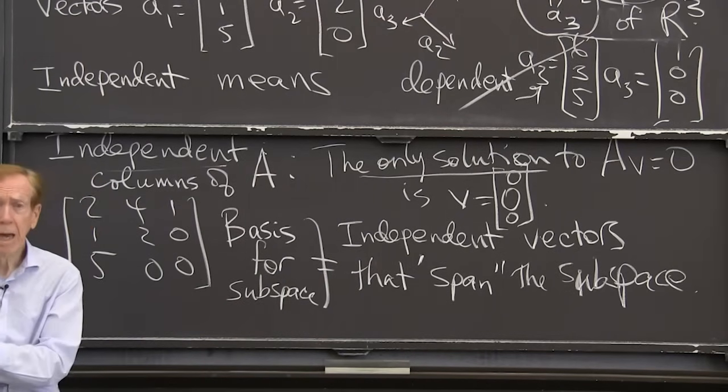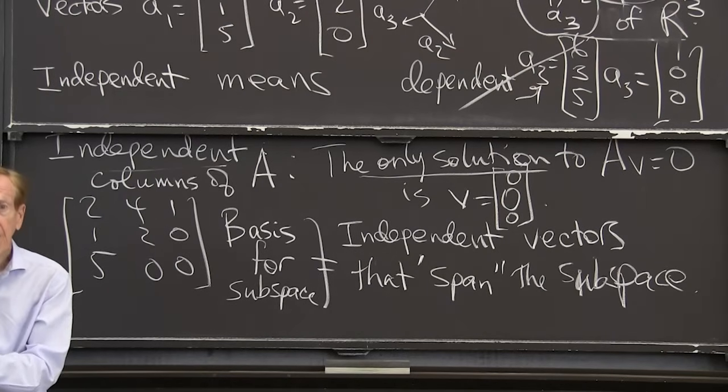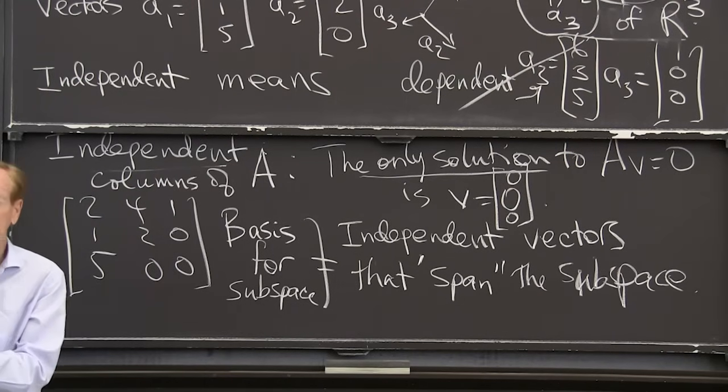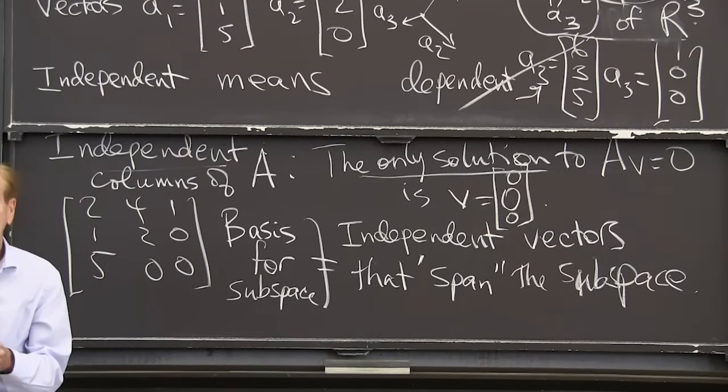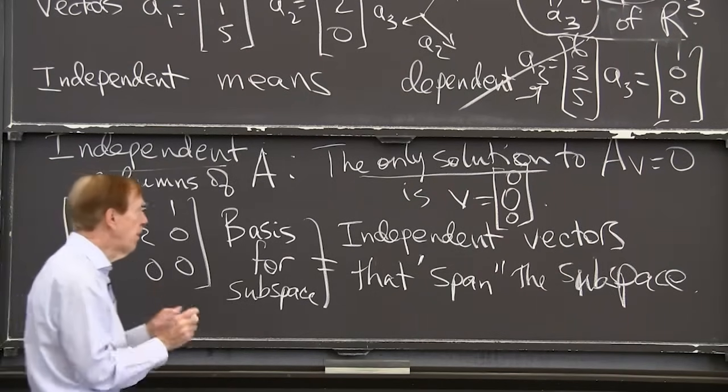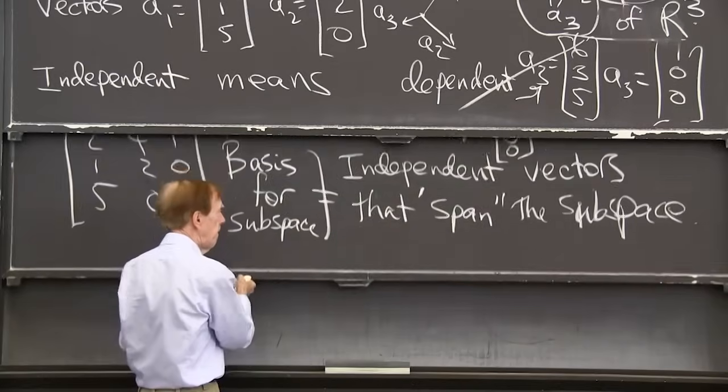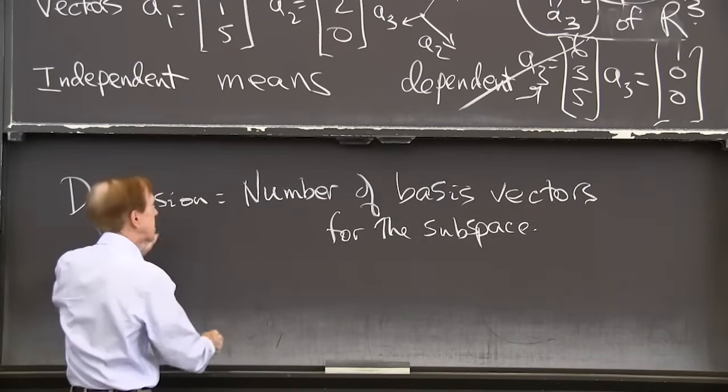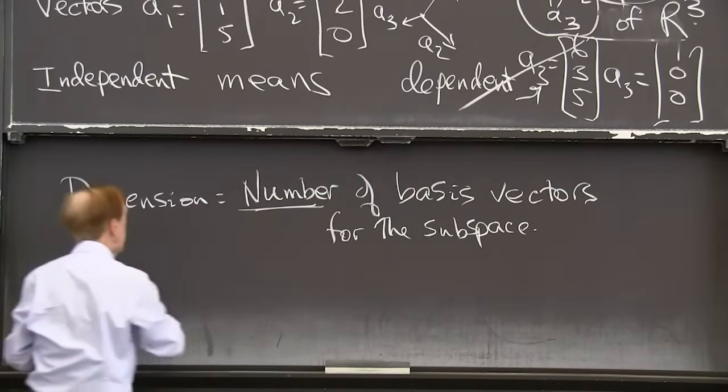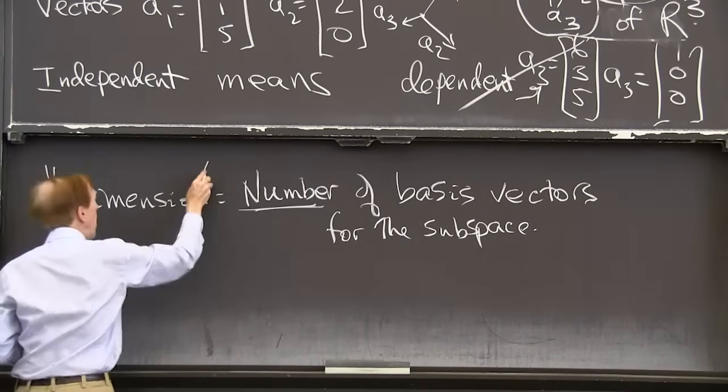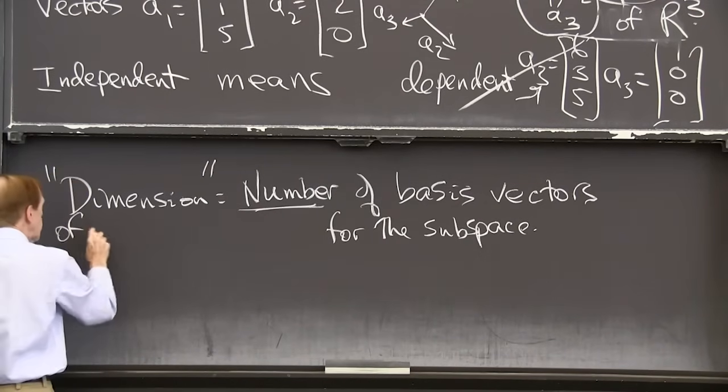If I have too many, then the dimension, they're independent. They're dependent. They won't be independent. They can't be a basis. Every basis. Every basis has the same number. And that number is the dimension of the subspace.